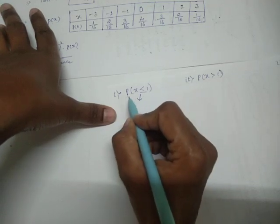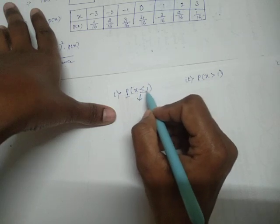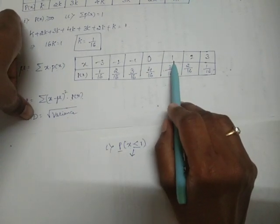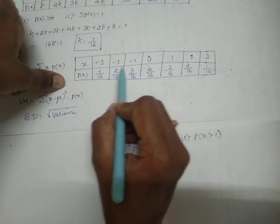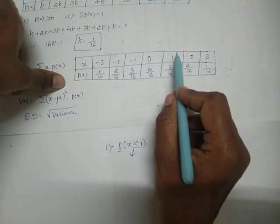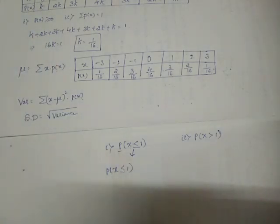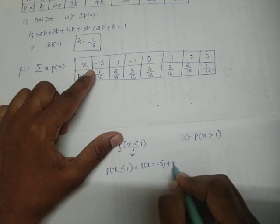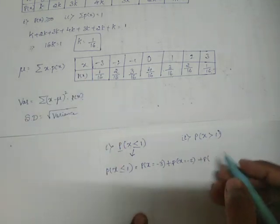P(X ≤ 1) means we have to consider all x values that are less than or equal to 1. From the table, we take all x values up to and including 1, and add their corresponding P(X) values. So P(X ≤ 1) = P(X = −3) + P(X = −2) + P(X = −1) + P(X = 0) + P(X = 1).